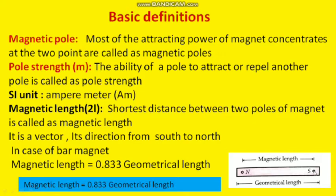What is pole strength? Every magnet has two poles, and those poles have attracting power. The ability of a pole to attract or repel another pole is called pole strength. For example, a north pole will repel another north pole brought near it. The SI unit of pole strength is ampere-meter.